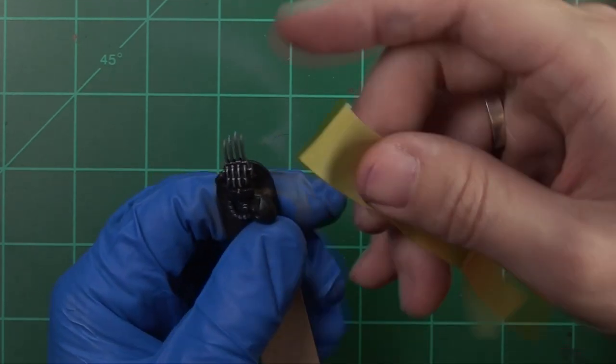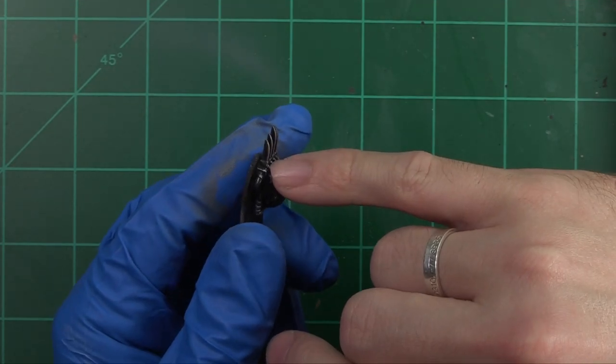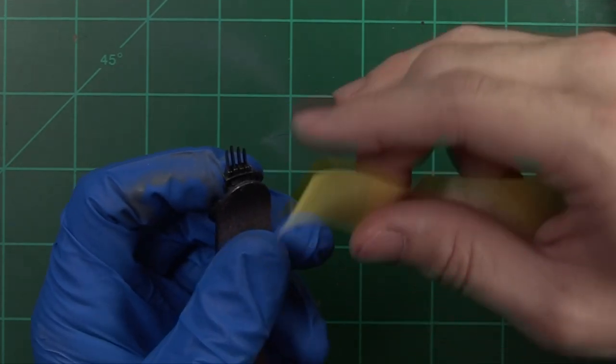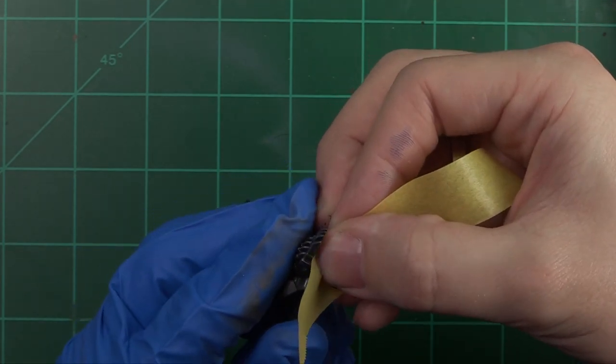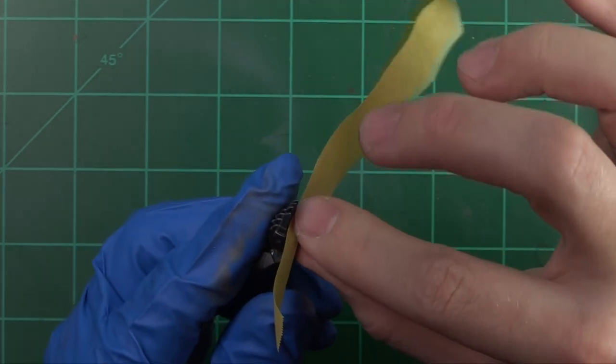We're going to start things off today by applying some masking tape. This is our Tamiya masking tape and we're going to be focusing on the bottom edge of these blades here. We want to cover up the areas we don't want to get paint on and make sure that the blades are predominantly what's exposed.